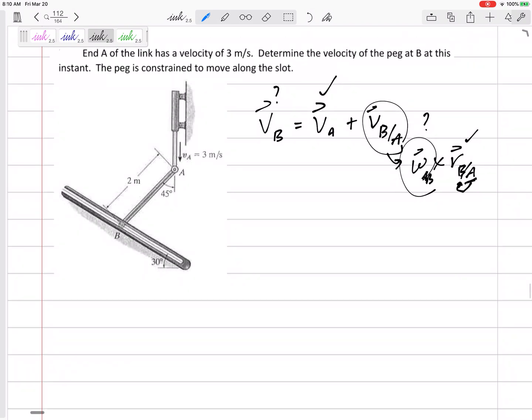Let's go ahead and start right there. I don't know V_B, but I need to—do I know anything about it? Yeah, I know it is confined to move along this slot right here. I think it's kind of moving backwards right there, but I could guess downwards right here.